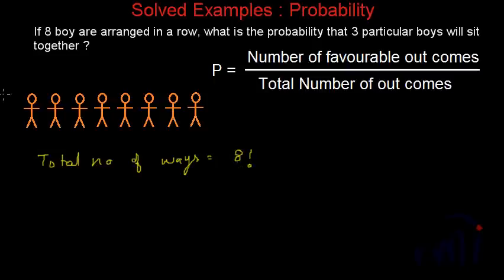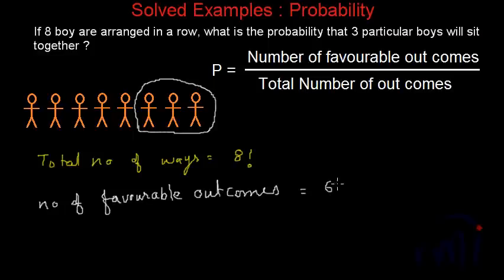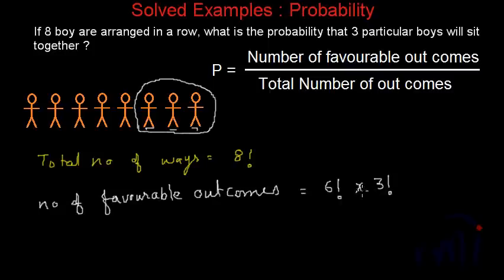This we have learned in permutation. Now if we talk about the number of favorable outcomes — that three particular boys are sitting together — if these three particular boys sit together, we count them as a single entity. If we count them as a single entity, then we have a total of six entities to be arranged. The number of favorable outcomes will be six factorial. But these three boys can shift places among themselves in three factorial ways, since there are three consecutive places where they can exchange positions. So total favorable outcomes are six factorial multiplied by three factorial.